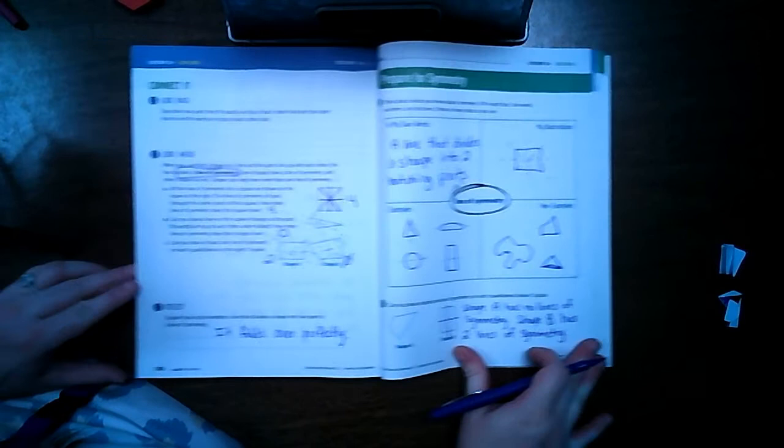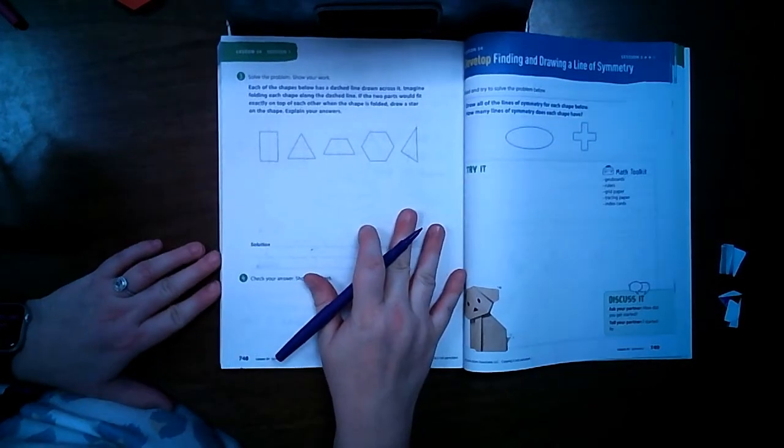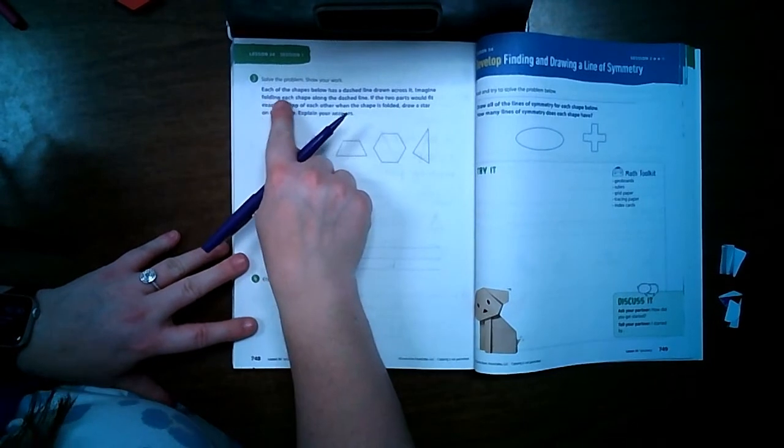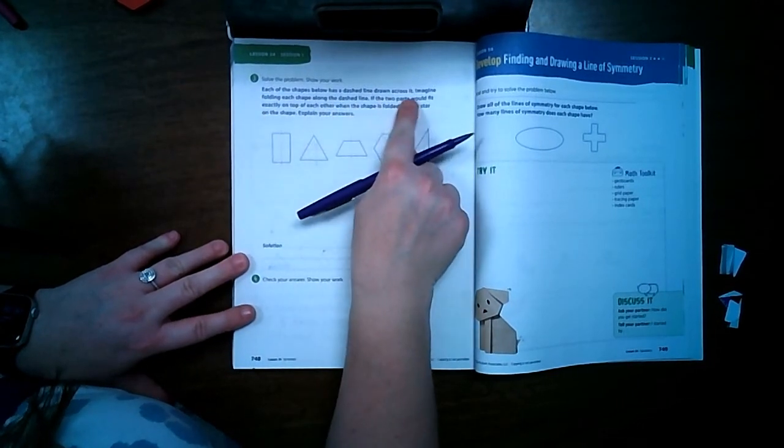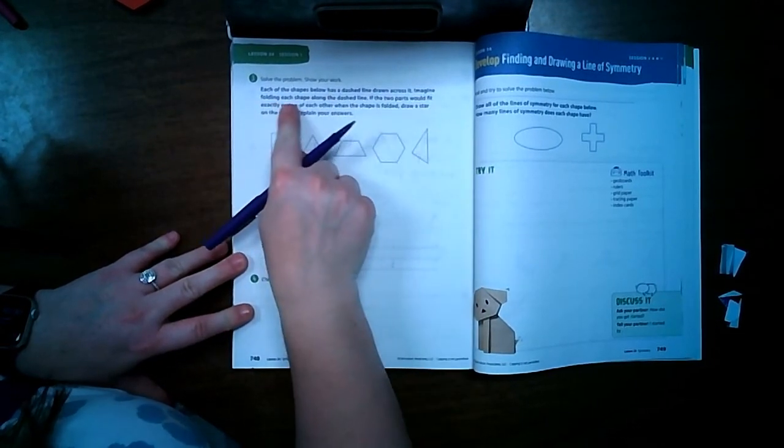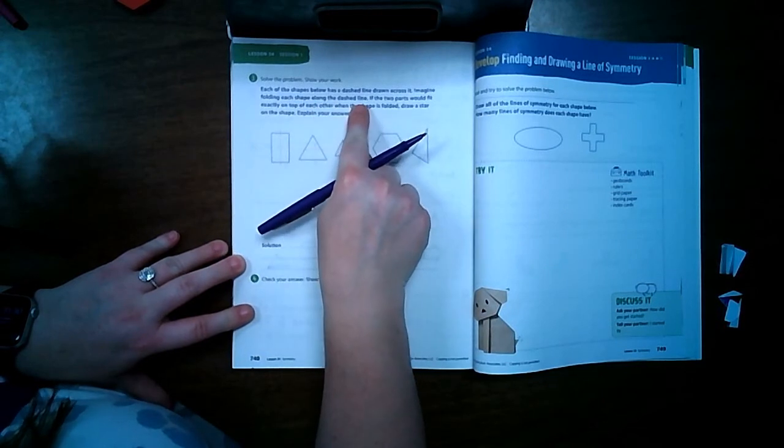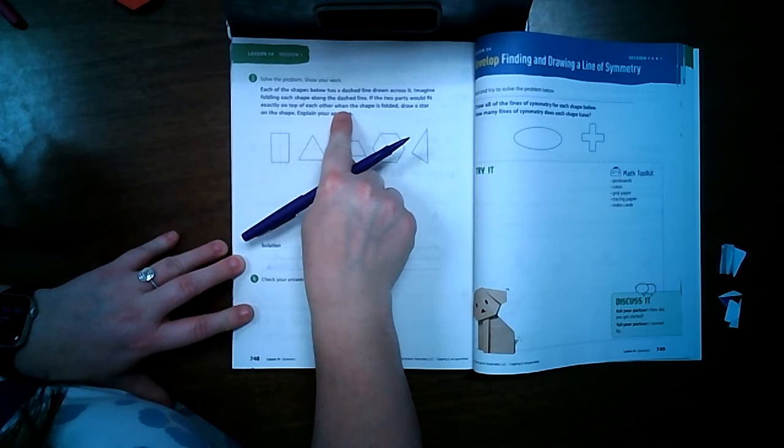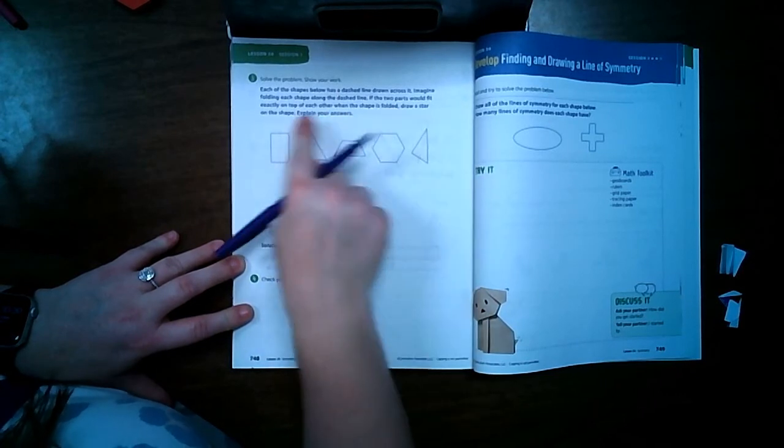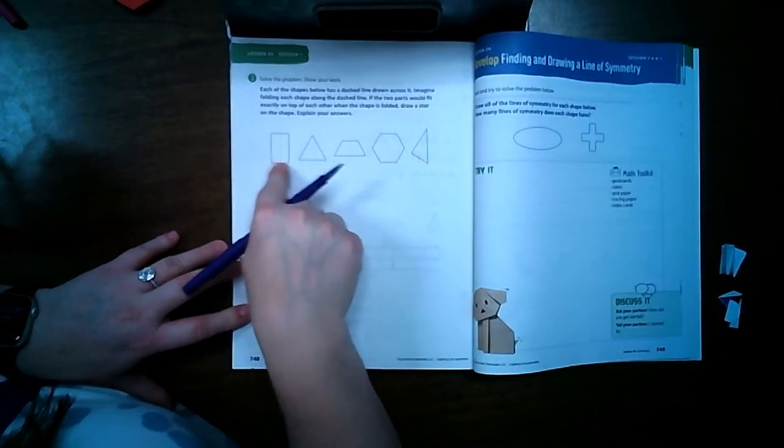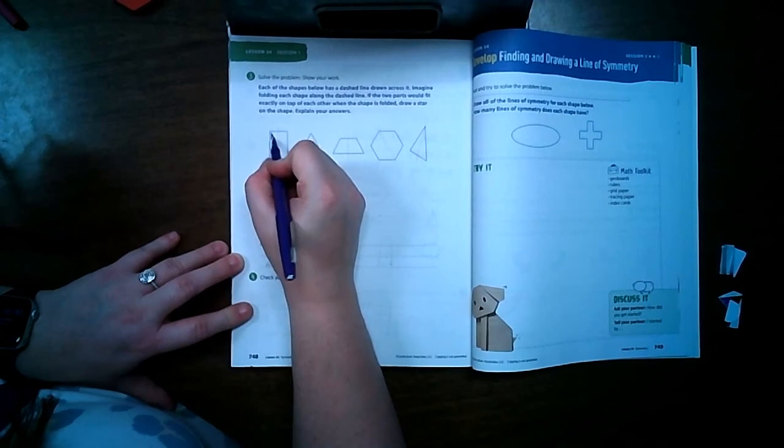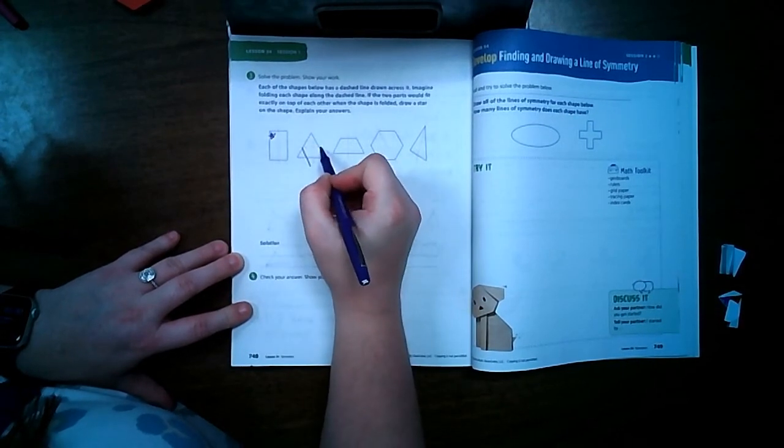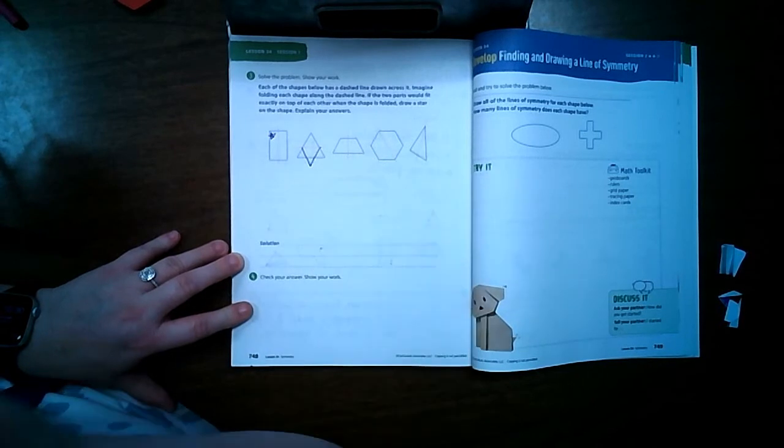Let's turn to page 748. This is just like our first problem. Each of the shapes below has a dashed line drawn across it. Imagine folding each shape along the dashed line. If the two parts would fit exactly on top of each other when the shape is folded, draw a star on the shape. Well, we've already learned with rectangles that we can do that. If we folded this down, it would kind of look like that. So that one is not correct.